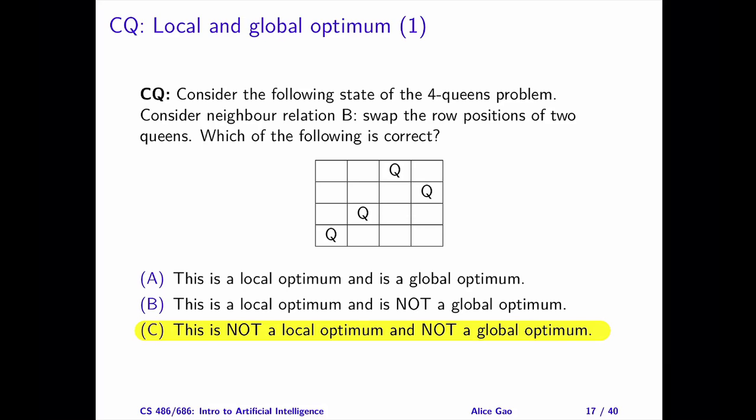To answer this, we need to calculate the cost of every neighbor and see if any neighbor has a strictly lower cost than the current state.